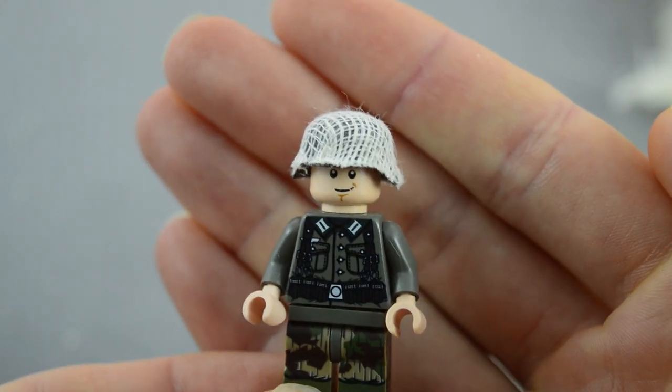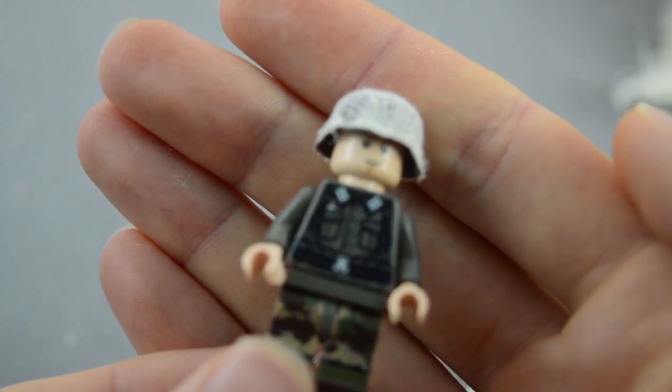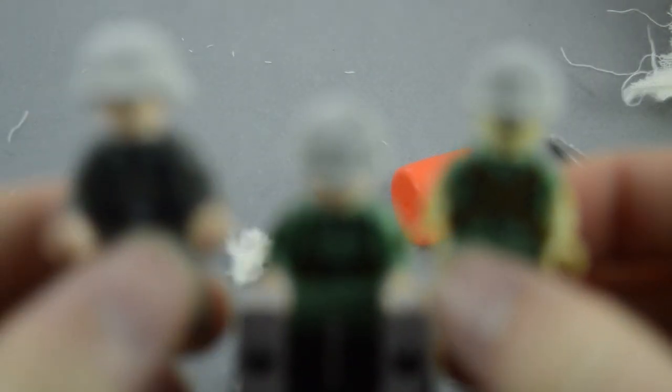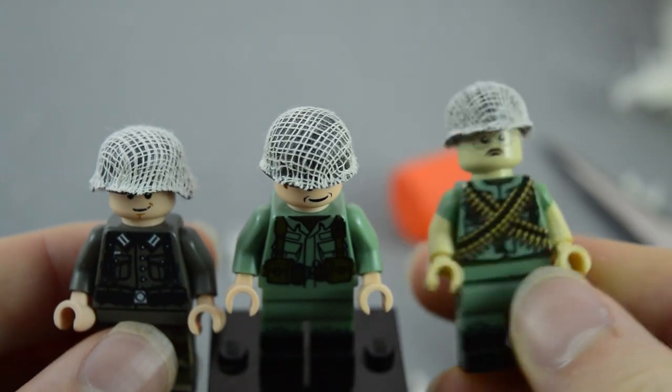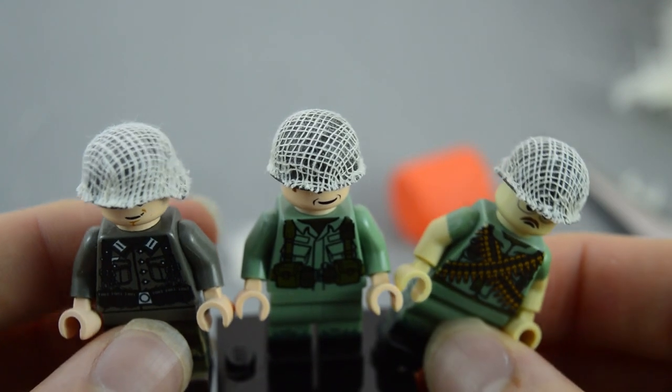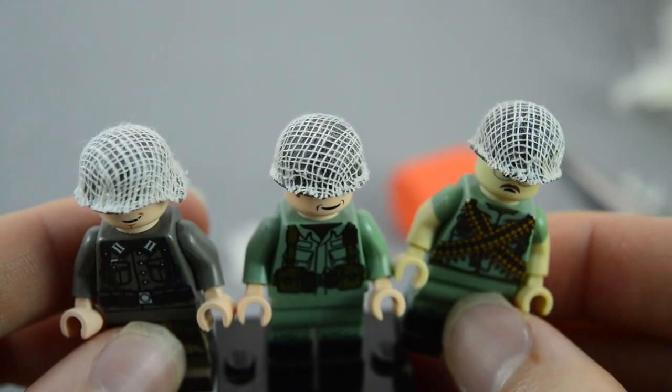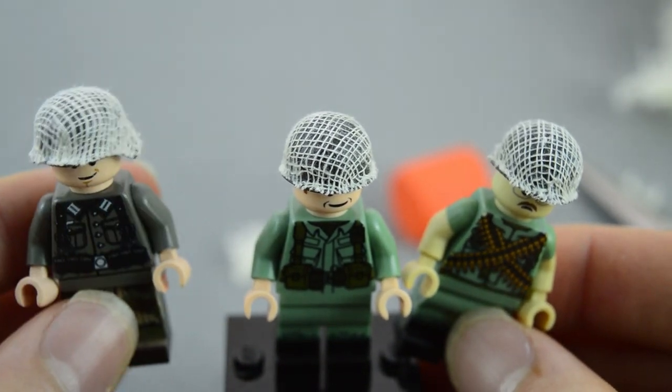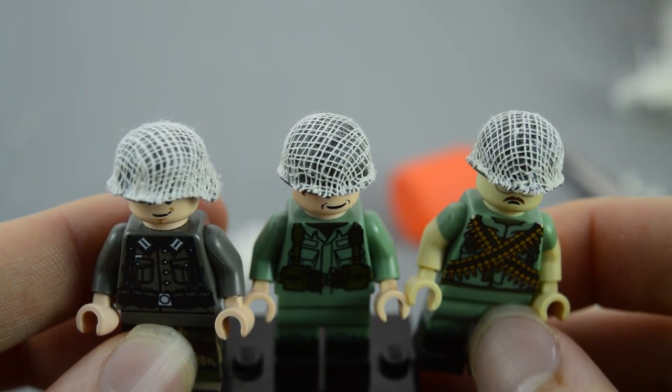You can also use this technique if you want for your German minifigures as well. You can put the netting on a Stahlhelm like I have done here. So it pretty much works for any type of helmet from any era. You can use it on pretty much anything. But yeah so these turned out pretty nicely. Even the one that we made in this video actually looks pretty good. So I think that's gonna be it for this video. Don't forget to subscribe and leave a comment down below especially if you guys were able to make these yourself. I would really like to see it if you guys were able to make it. And leave a like and I will see you guys in the next video.